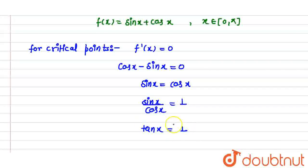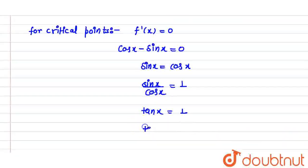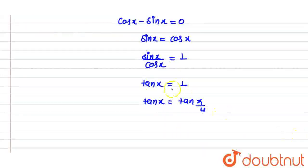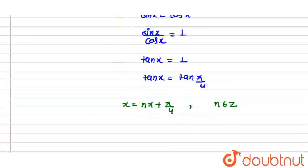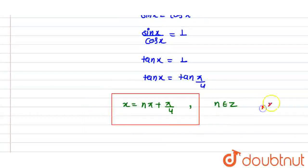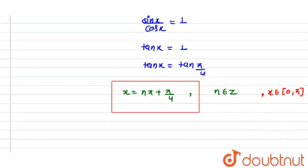अब tan x = 1 कब होता है? tan(π/4) पे 1 होता है। तो tan x = tan(π/4)। tan θ = tan α हो गया, तो θ = nπ + α, where n belongs to integers — यह general solution होता है। अब x जो है वो closed interval [0, π] पर belong कर रहा है, यानि x हमारी 0 से π के बीच में ही होनी चाहिए।